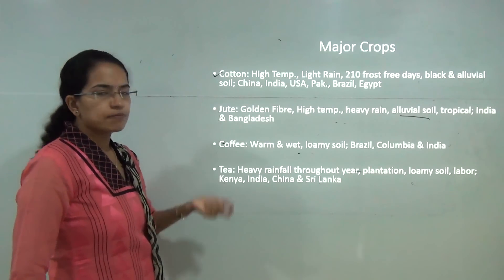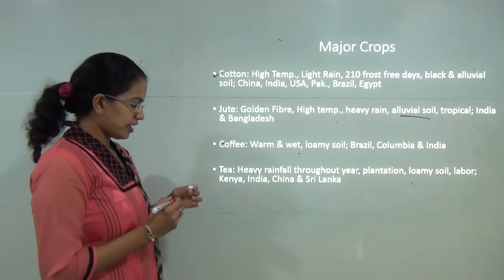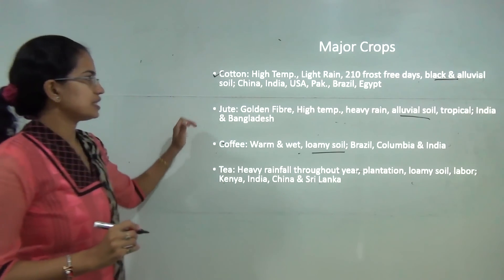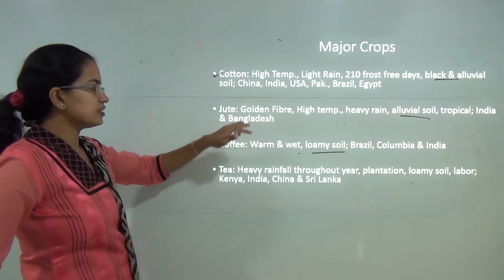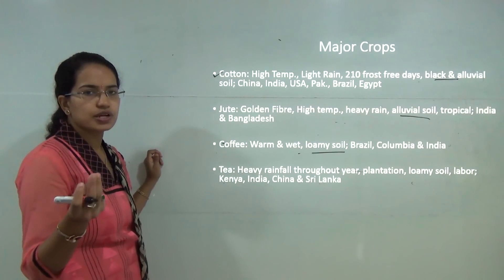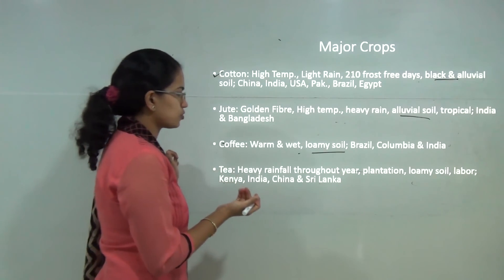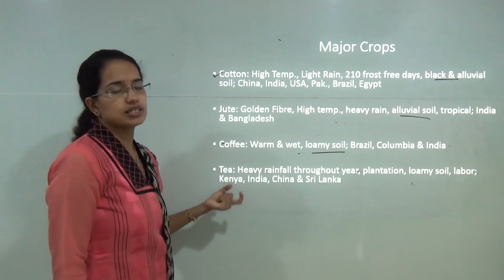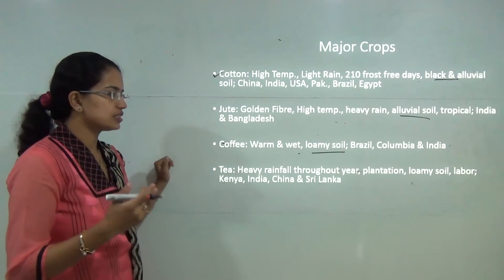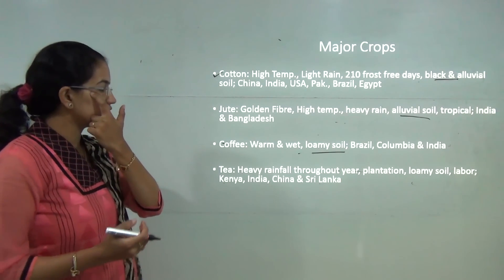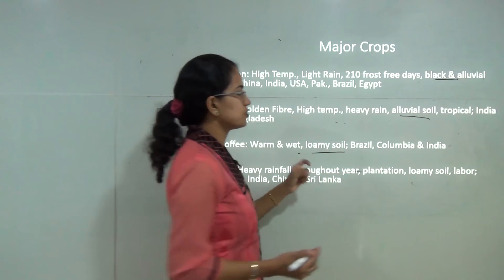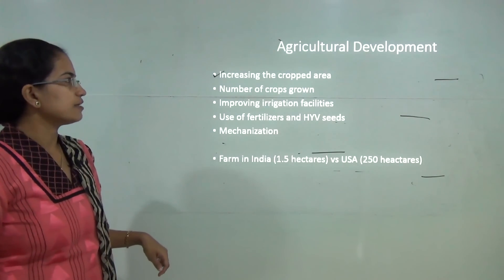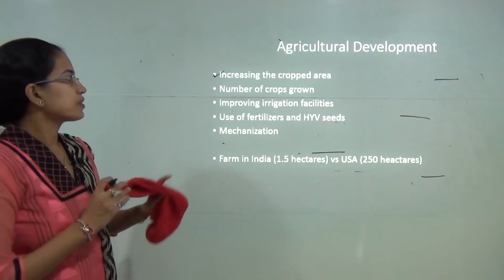Jute, known as the golden fiber, requires high temperature, high rainfall, and high humidity, growing mainly on alluvial soil — India and Bangladesh are prime producers. Coffee requires a warm and wet climate with loamy soil; Brazil, Colombia, and India are common examples. Tea grows in regions with good rainfall throughout the year, again in loamy soil, requiring lots of labor — Kenya, India, China, and Sri Lanka are the prime producers.